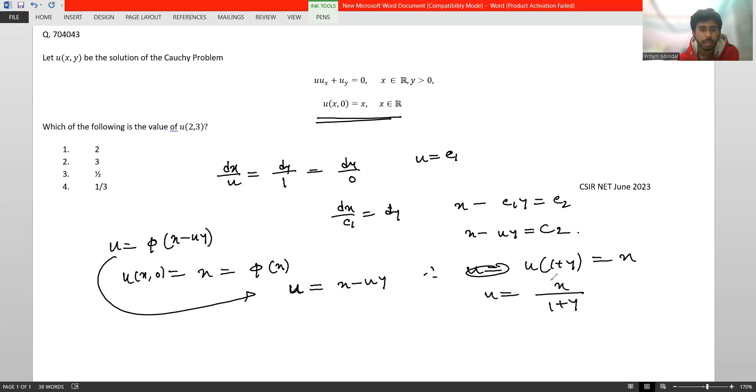Now, putting x = 2 and y = 3, we get u(2,3) = 2/(1 + 3), that is 2/4, that is equal to 1/2. Therefore, our third option is correct.